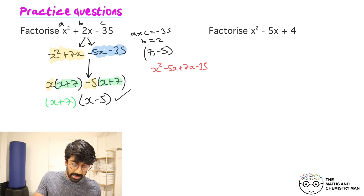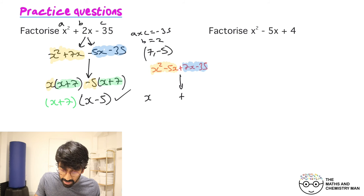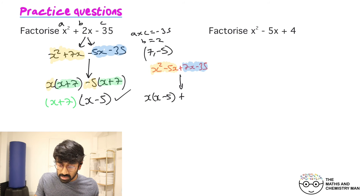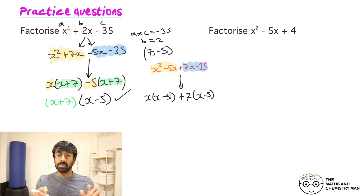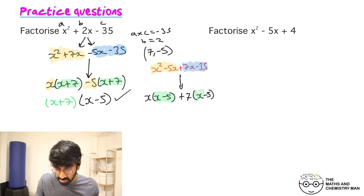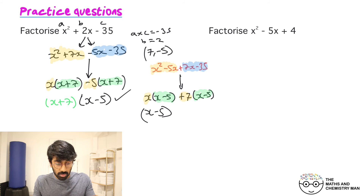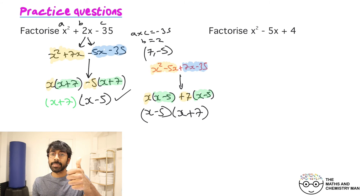If you split it the other way, here's how it works: highlight x squared and minus 5x in yellow and 7x and minus 35 in blue. Bring down the plus sign. Factorize: x outside gives x minus 5, then 7 outside gives x minus 5. Brackets match again — x minus 5 forms the first bracket, and x plus 7 is the second. Same answer either way.